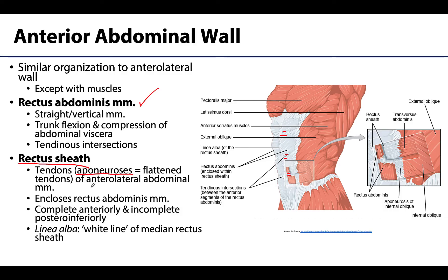The aponeurosis encloses the rectus abdominis muscle. The anterior portion of the rectus sheath is complete, extending from the xiphoid down to the pubic symphysis, but the posterior inferior portion of the rectus sheath is actually incomplete, leaving only transversalis fascia and peritoneum in that region. Running right down the midline of the anterior rectus sheath is the linea alba — that white line of the median rectus sheath — which appears very opaque compared to the rest of the rectus sheath.